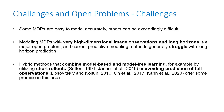In general, model-based approaches have problems with high-dimensional image observations and long horizons. Some environments are easy to predict (like physical problems) while others are extremely difficult. An approach that works according to Sutton and Jenner is to combine model-based with model-free — use the model for short rollouts to get more samples for additional offline training, while avoiding prediction of full observations.